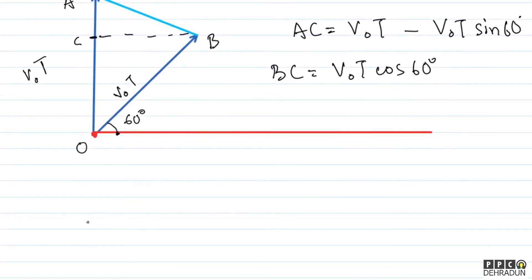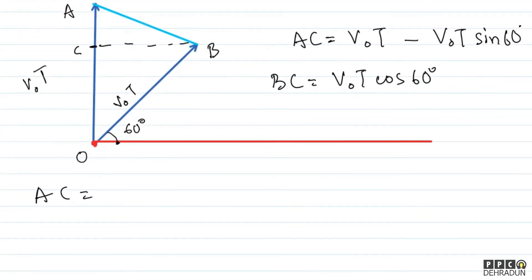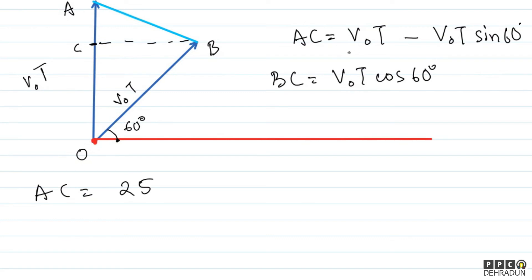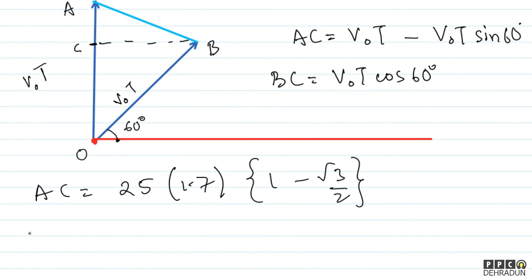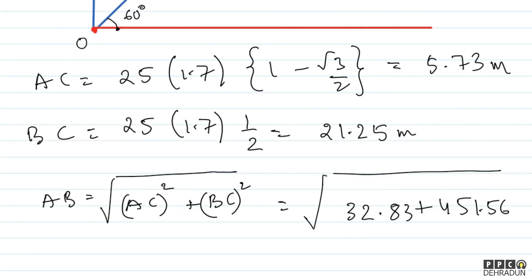Let's take the two values exactly. We need AC: V0 is 25, time is 1.7, so that is 25 into 1.7, times (1 minus sin 60), where sin 60 is root 3 over 2. And BC is 25 into 1.7, times cos 60. Now with AC and BC calculated, I apply the Pythagorean theorem to find AB. The value of AB comes out to be 22 meters.